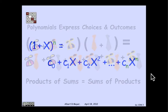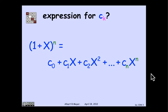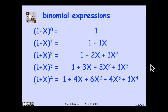The binomial theorem is interested in the expression (1 + x) raised to the nth power. We know this will be a polynomial of degree n, written as c0 + c1·x + c2·x² + … + cn·xⁿ, and we want to find the expressions for ck. For example, (1 + x)⁴ = 1 + 4x + 6x² + 4x³ + x⁴. What's the pattern underlying the coefficients 1, 4, 6, 4, 1?